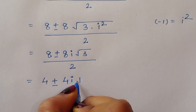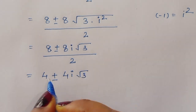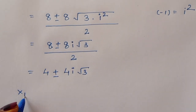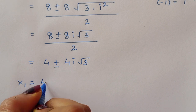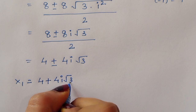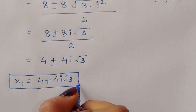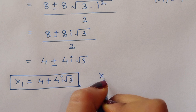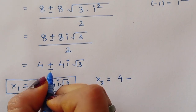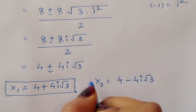So we got two values of x: x1 is equal to 4 plus 4i square root of 3, and x2 is equal to 4 minus 4i square root of 3.